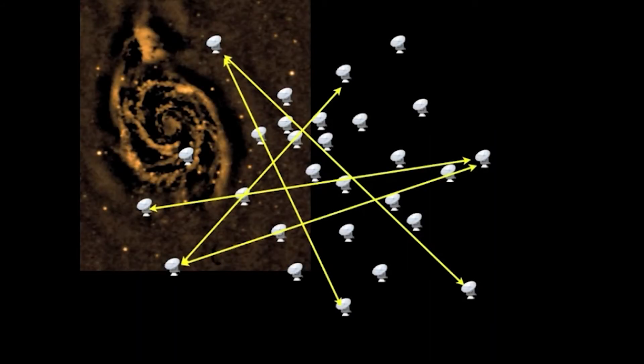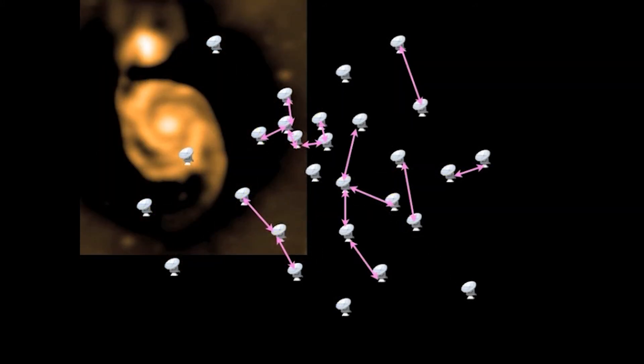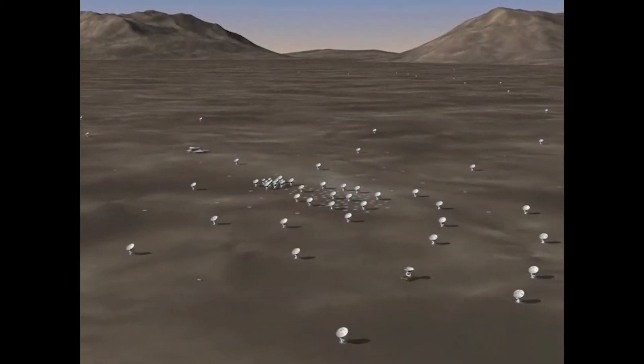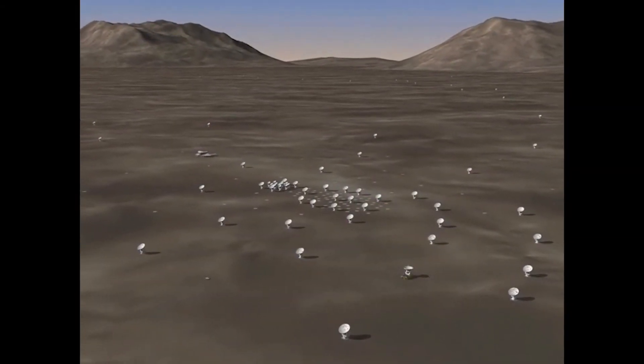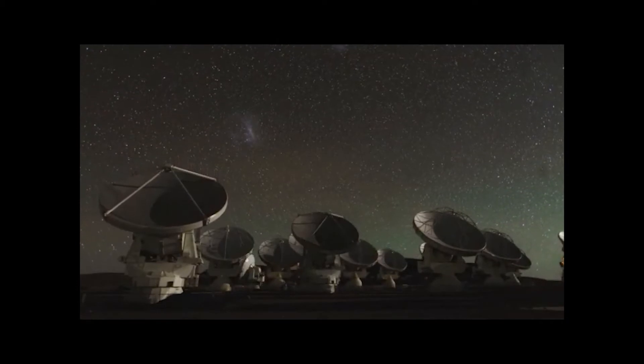The angular resolution determines the largest baseline needed, and the largest angular scale determines the smallest baselines. With 50 antennas giving more than 1200 baselines, the ALMA 12 meter array can detect a wide range of size scales.